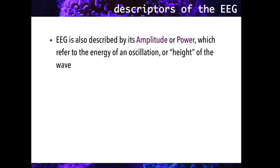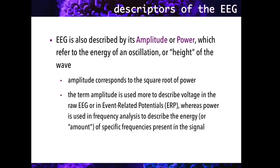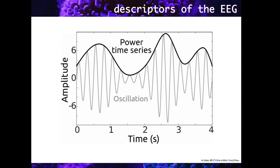EEG is also characterized by its amplitude or power, which is simply the energy of the oscillation, or height of the wave. Amplitude corresponds to the square root of the power, and so they are easily exchanged. We usually employ the term amplitude when we describe voltage in the raw EEG or in event-related potentials, whereas the term power is used in frequency analysis to describe the energy or amount of specific frequencies that compose the signal in a time interval. You can see in the graph how an oscillation of a constant frequency happens in time, whereas its power changes, as reflected in the power time series.